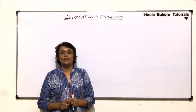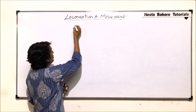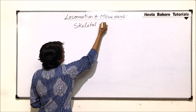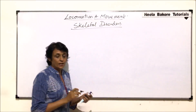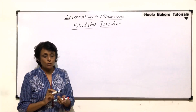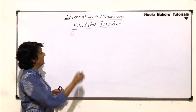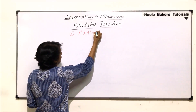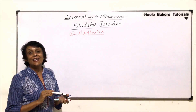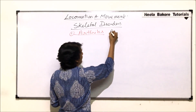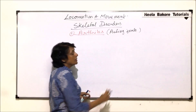We will now take up the various disorders in the skeletal system, so skeletal disorders is what we will be discussing here. Our main focus is about the bones. The first one we talk of is arthritis, which is normally termed as aching joints — here the problem is with the joints.